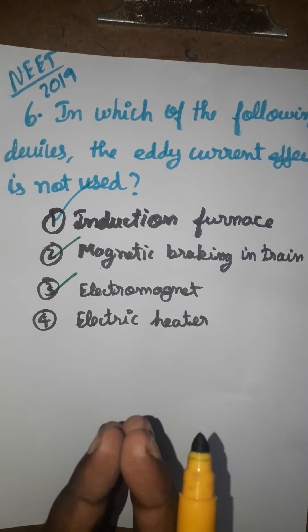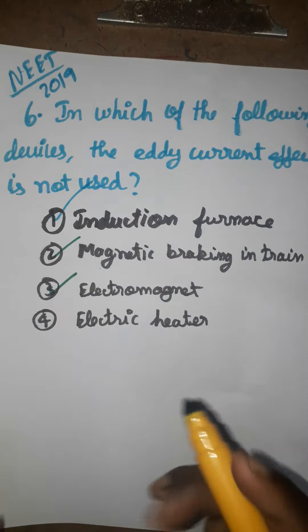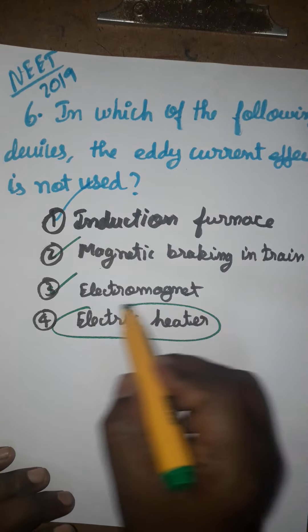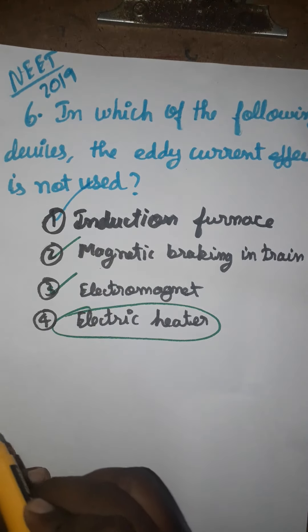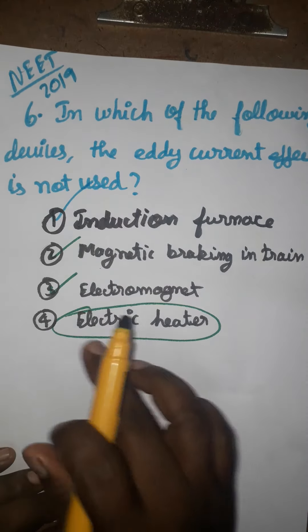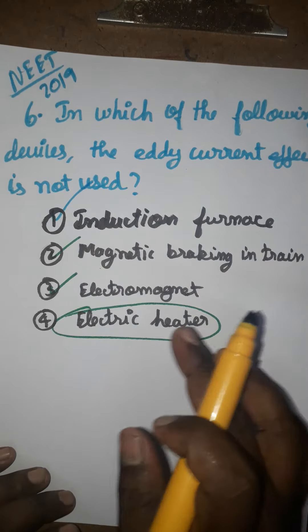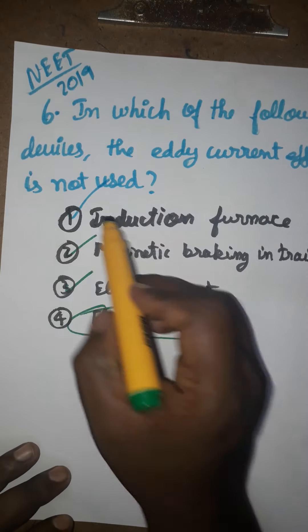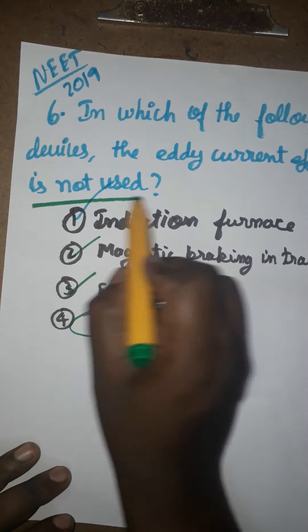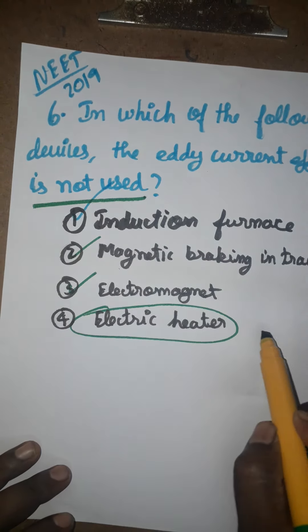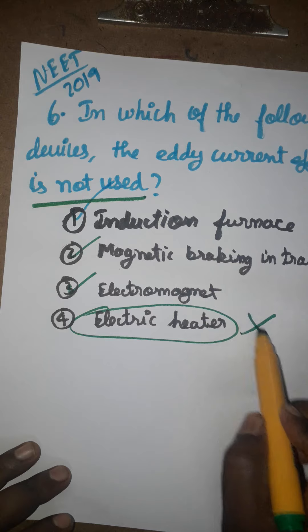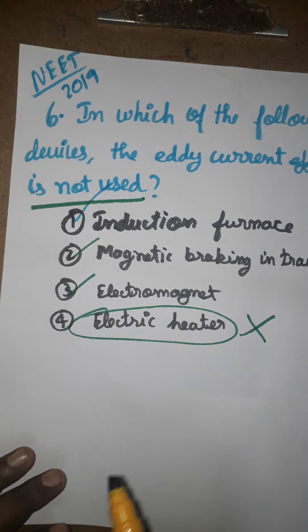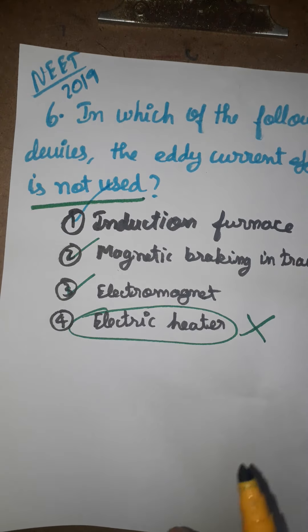However, in a normal electrical heater, we are not using eddy current. Even a fan uses eddy current, but a normal electrical heater does not operate on the principle of eddy current. So the question asks which is not used in eddy current — the answer is the electrical heater.